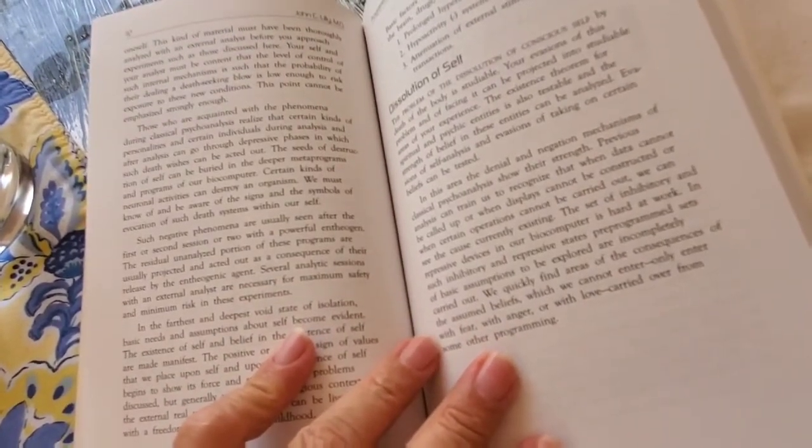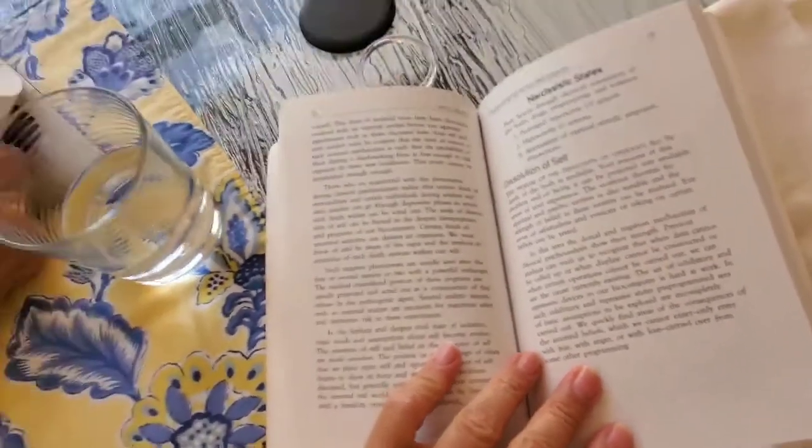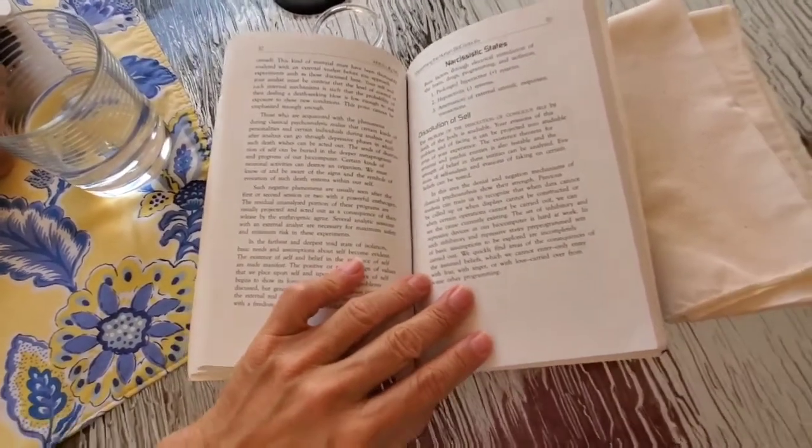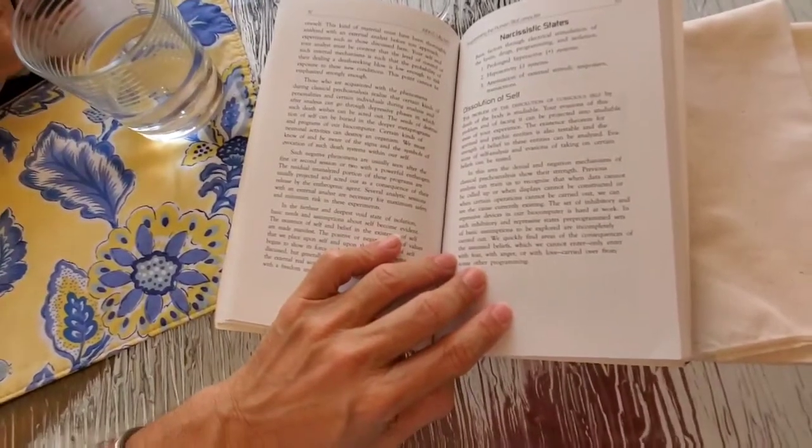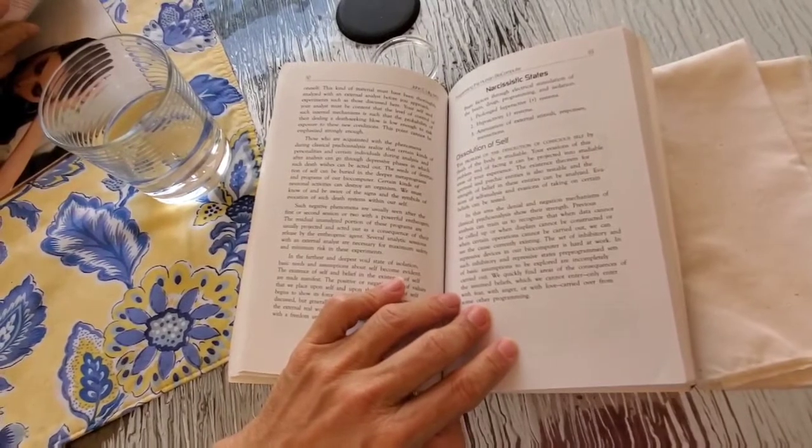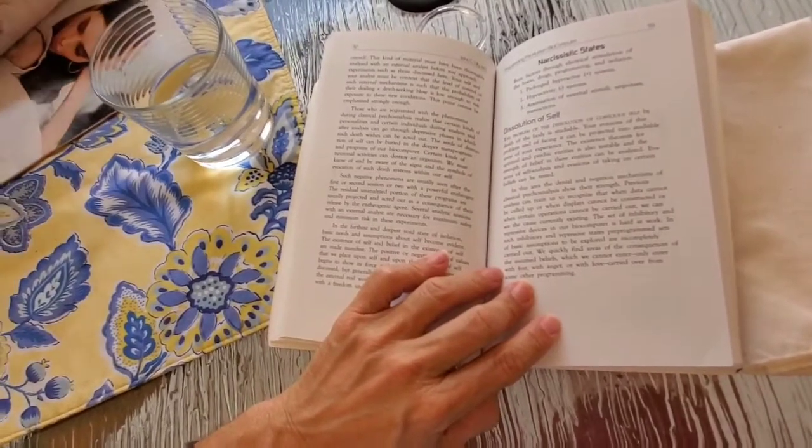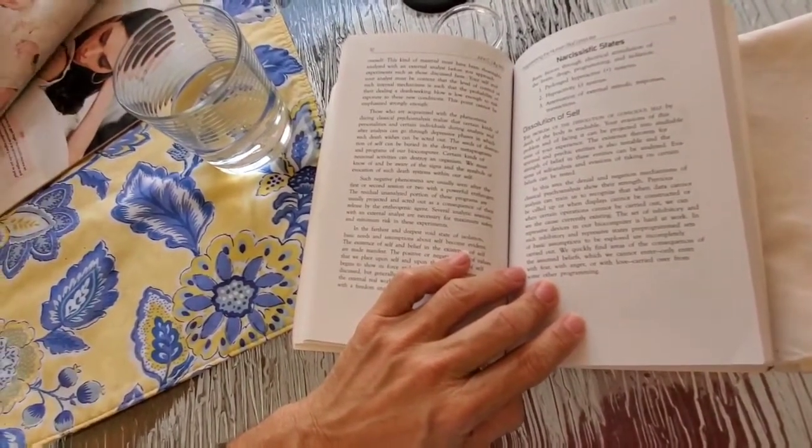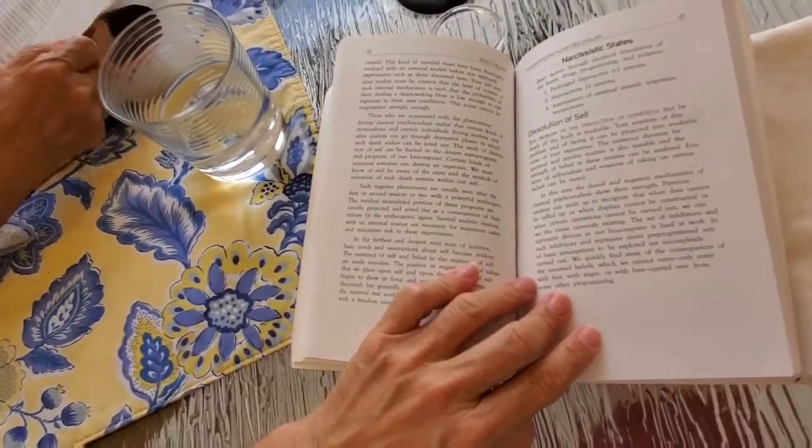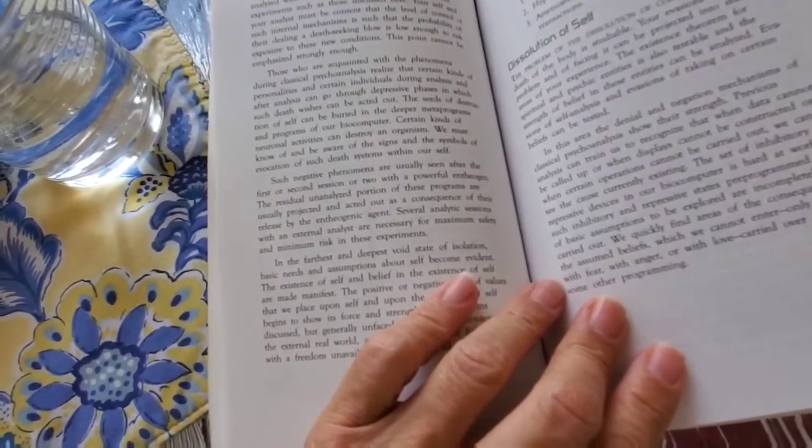Those who are acquainted with the phenomena during classical psychoanalysis realize that certain kinds of personalities and certain individuals during and after analysis can go through depressive phases in which such death wishes can be acted out. The seeds of destruction of self can be buried in the deeper metaprograms and programs of our biocomputer. Certain kinds of neuronal activities can destroy an organism. We must know of and be aware of the signs and symbols of evocation of such death systems within ourselves.